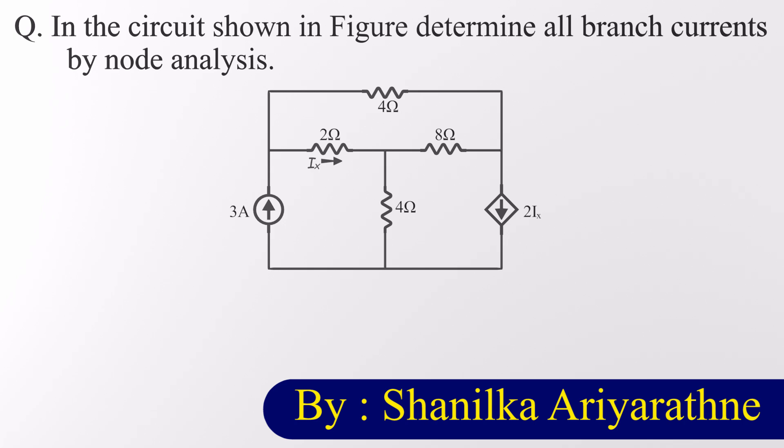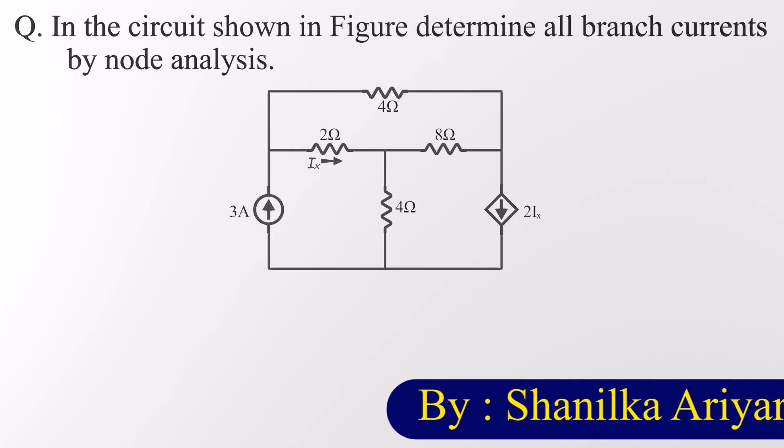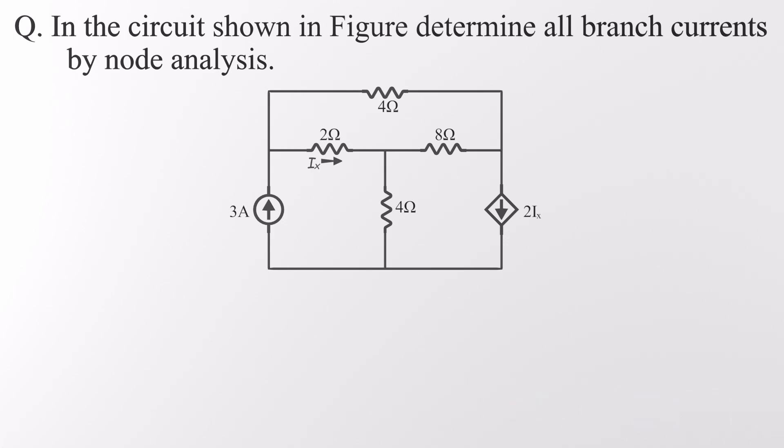In the circuit shown, we're going to figure out all the branch currents using a powerful tool in circuit analysis: nodal analysis. The idea is simple. We'll find the voltage at each node relative to a common reference point, usually ground, by applying Kirchhoff's Current Law, or KCL. Once we know those voltages, calculating the branch currents is a piece of cake.